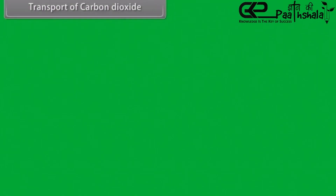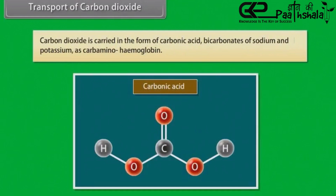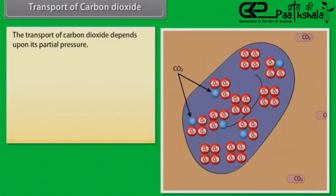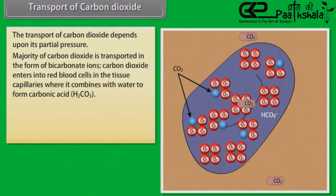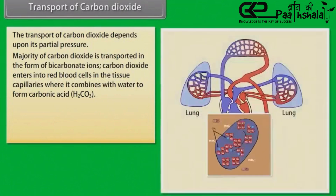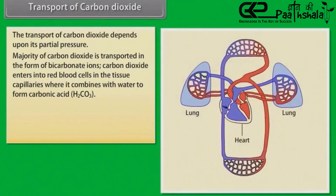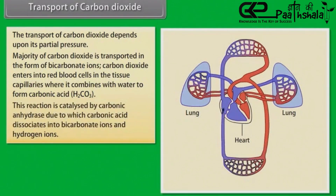Transport of Carbon Dioxide: Carbon dioxide is carried in the form of carbonic acid, bicarbonates of sodium and potassium, and as carbaminohemoglobin. The transport of carbon dioxide depends upon its partial pressure. Majority of carbon dioxide is transported in the form of bicarbonate ions. Carbon dioxide enters into red blood cells in the tissue capillaries, where it combines with water to form carbonic acid. This reaction is catalyzed by carbonic anhydrase, due to which carbonic acid dissociates into bicarbonate ions and hydrogen ions.